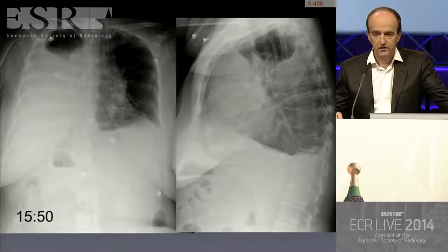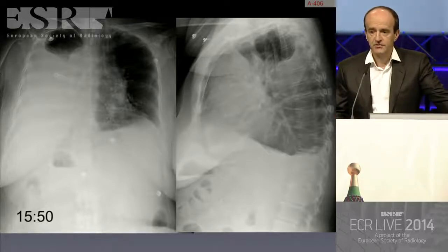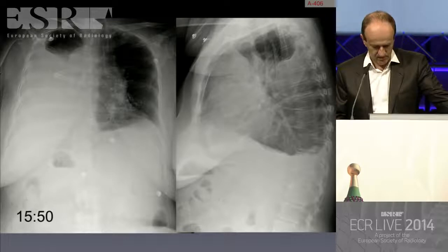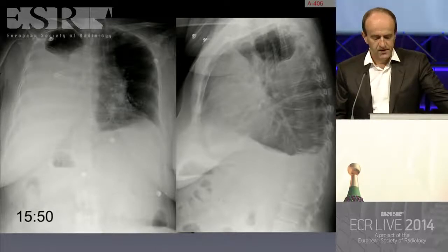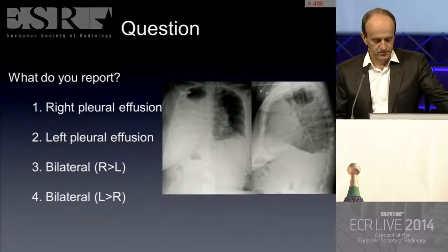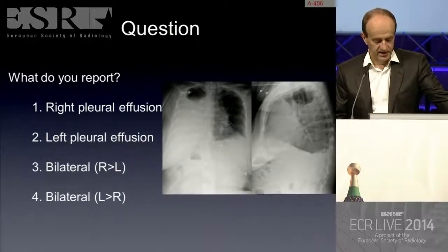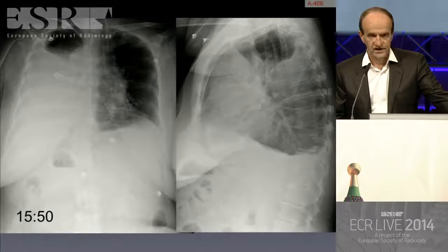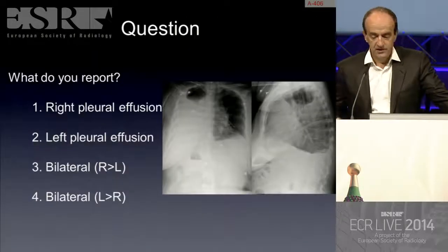Case number one: a 62-year-old woman with dyspnea and a past history of ovarian carcinoma. Here are the frontal and lateral chest radiographs. What would you report? A right pleural effusion, a left pleural effusion, bilateral right larger than left, or bilateral left larger than right? Please vote now.